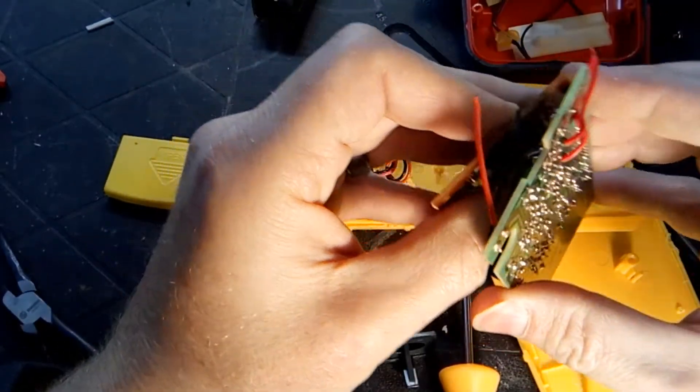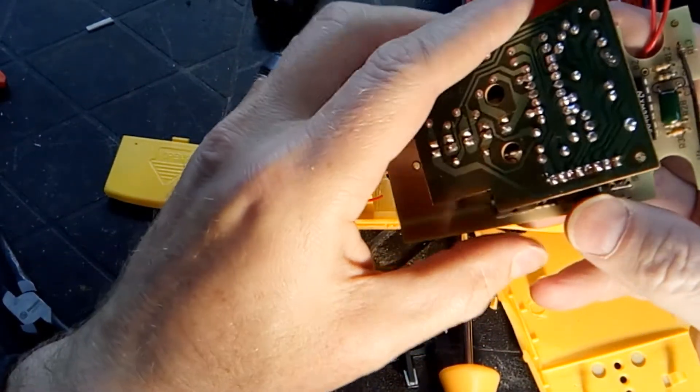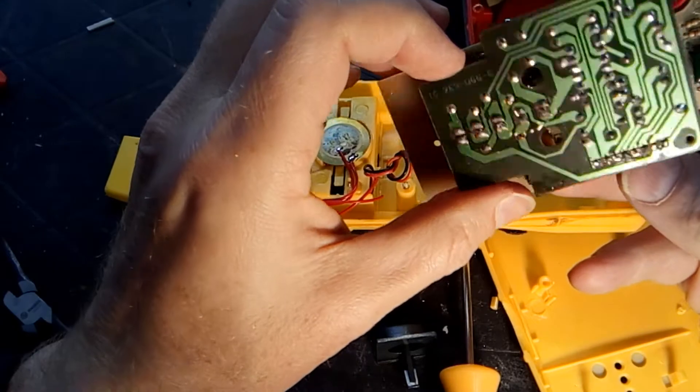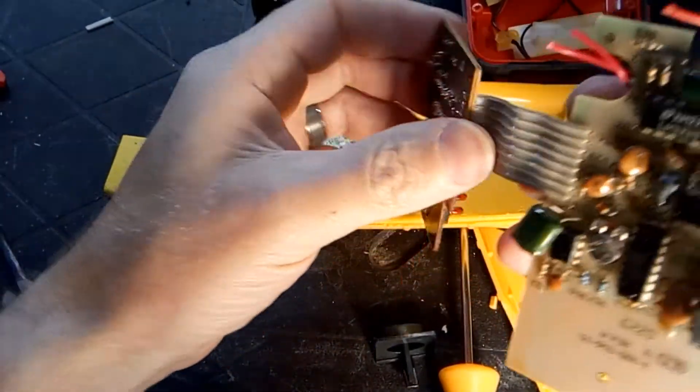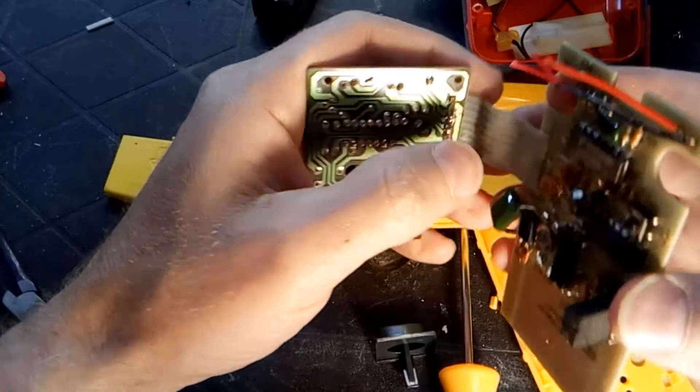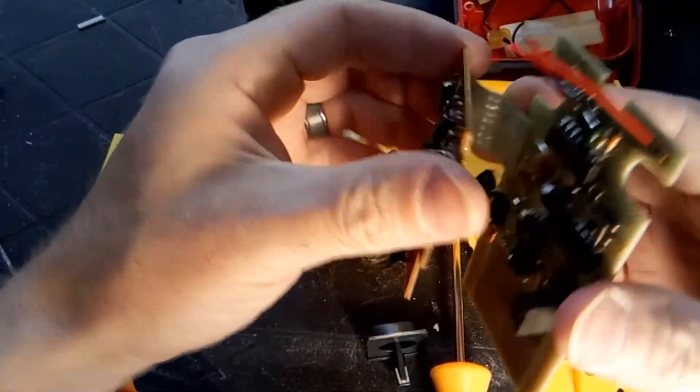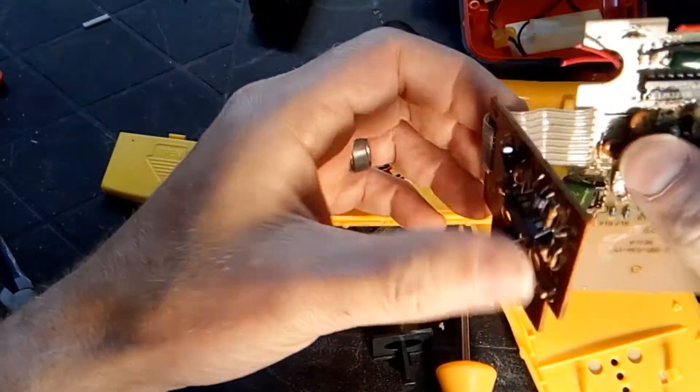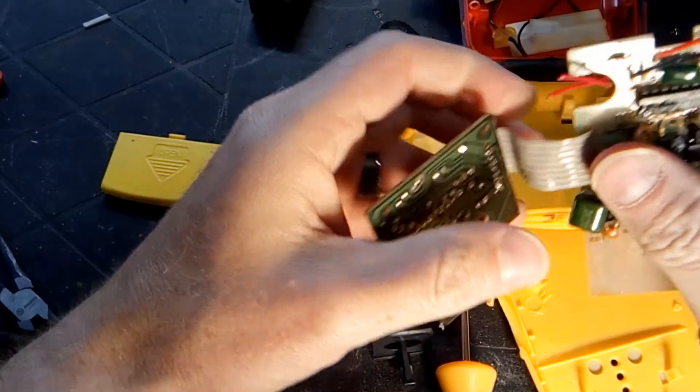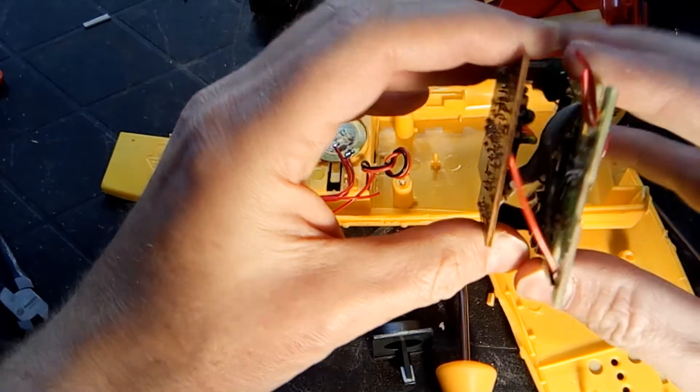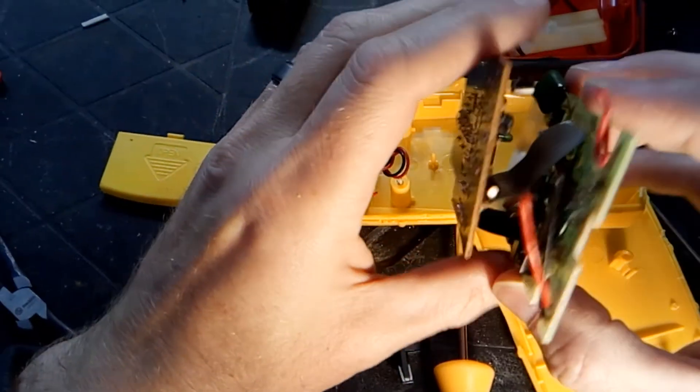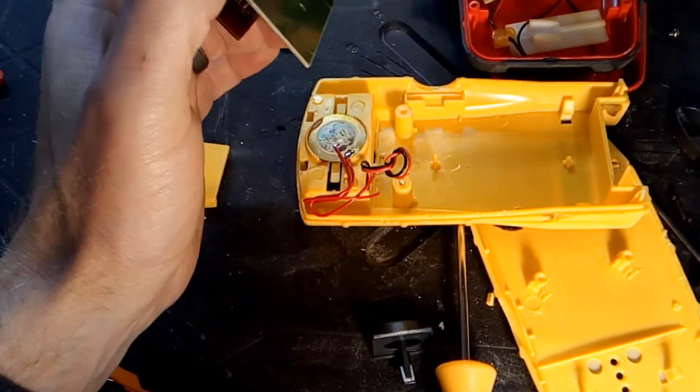Well that's about it for this video. Again, these are just stud finders. Get them at your local hardware store or online. Some of them have different features like this one. The other one had a laser level. Some of them are built into like tape measures and things like that. All right, well thanks for watching.